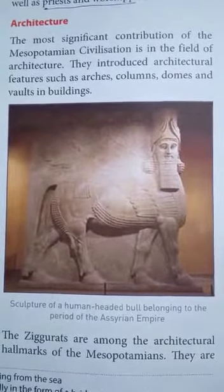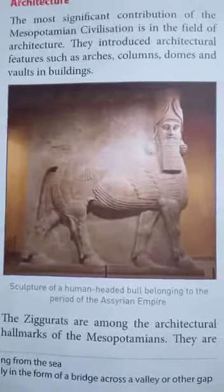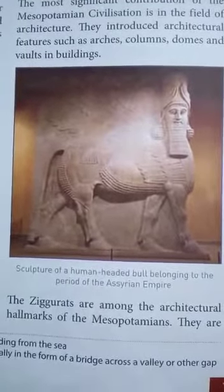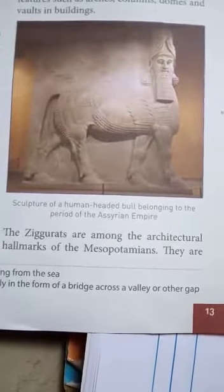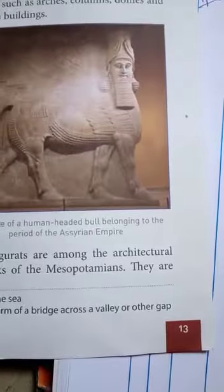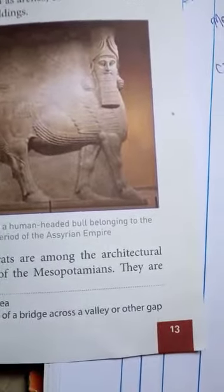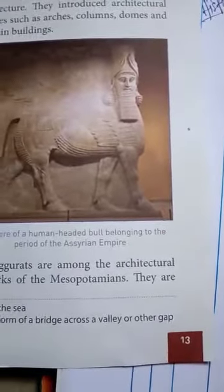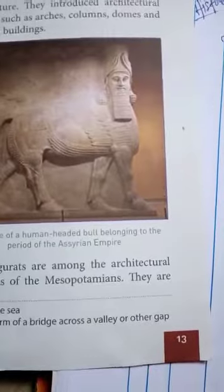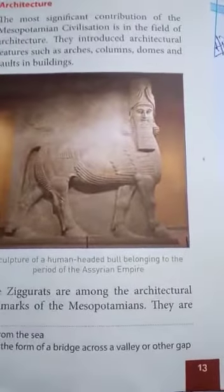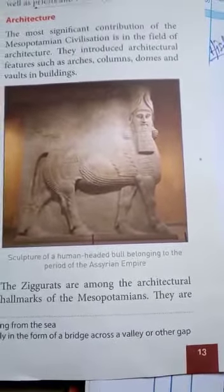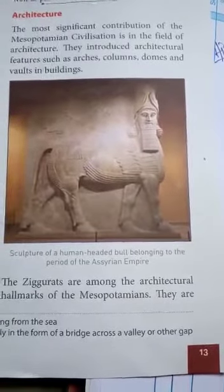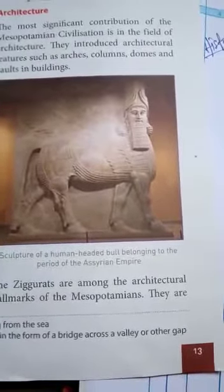They introduced architectural features such as arches, columns, domes, and vaults in buildings. In the design and construction of buildings, they used various architectural elements like arches, columns, domes, and vaults. Let us see what each of these is.